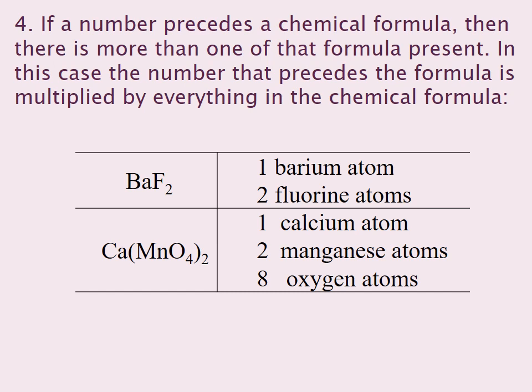If I placed a 2 in front of the BaF2, that means I have 2 barium fluorides and everything must double. So 1 barium atom becomes 2 barium atoms, and 2 fluorine atoms becomes 4 fluorine atoms.